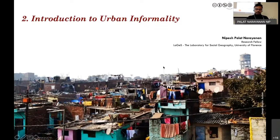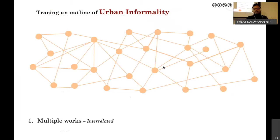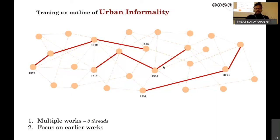How I intend to do this: at a conceptual level, imagine there are lots of dots representing different works on urban informality and different clusters or schools of urban informality which exist and are somehow interrelated. I will try to trace three strands of literature which conceptualize urban informality, which I introduced in yesterday's class.